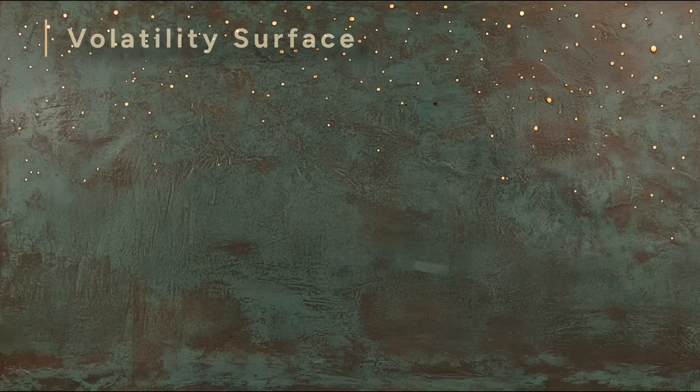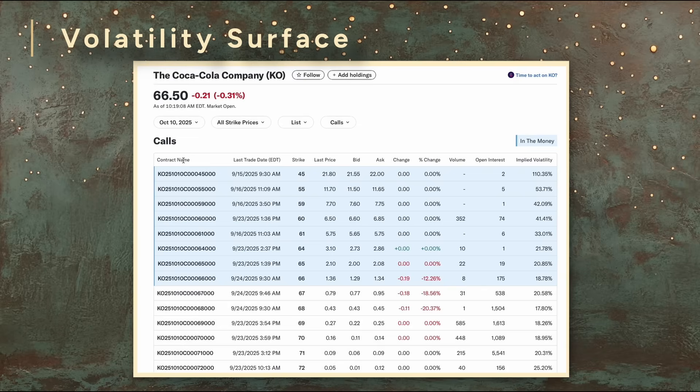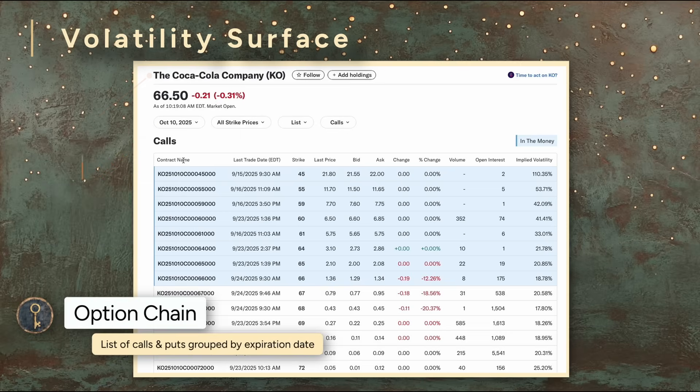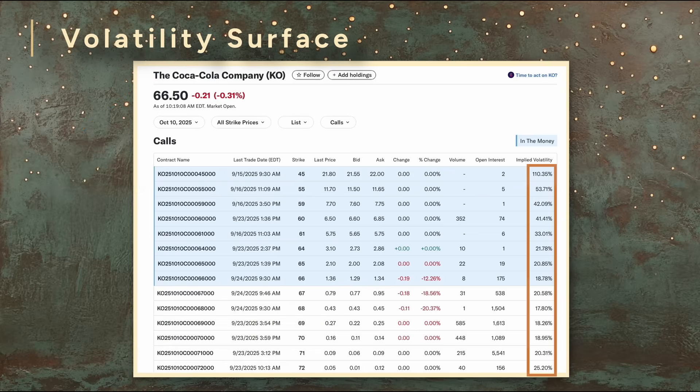You can find the implied volatility for options on some financial sites. Typically, you'll see the data for all of the options grouped by expiration date. This table is called an option chain. Pick a stock. You'll notice that the implied volatility isn't the same for every option. Instead, you'll see a whole range of implied volatilities depending on the strike price and expiration date.